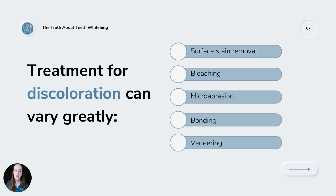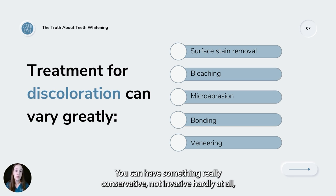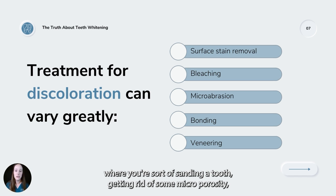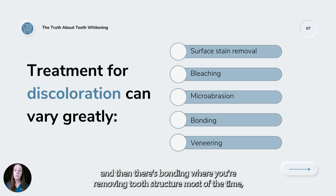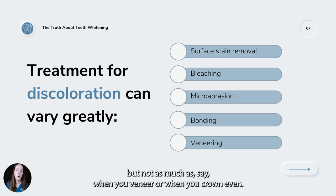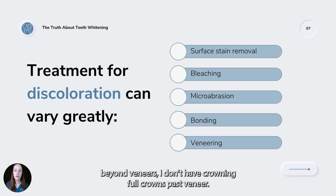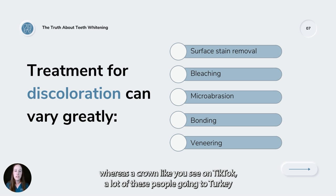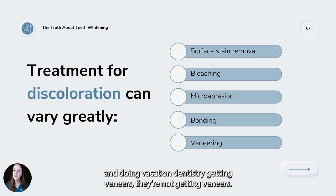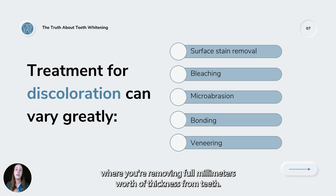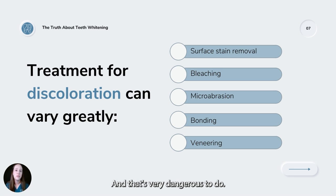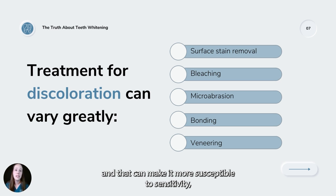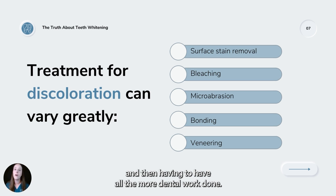Treatment ranges in invasiveness. The most conservative is just surface stain removal, then bleaching, then microabrasion where you're sanding the tooth, then bonding, then veneers, and then crowns. A veneer removes just a very tiny surface level of enamel to bond porcelain to it. Whereas a crown — like what you see on TikTok with people going to Turkey for vacation dentistry — removes full millimeters of tooth thickness. That is very dangerous because removing more tooth structure gets you closer to the pulp, making the tooth more susceptible to sensitivity, pain, nerve death, and root canals.